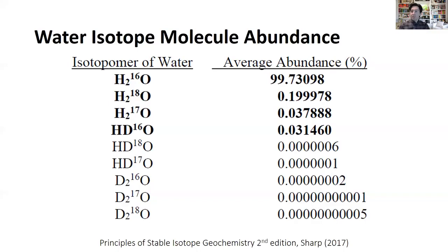The second most abundant is H₂¹⁸O — two units of protium and oxygen-18 — at about 0.2%. Then we have H₂¹⁷O at less than 0.037%, and then one protium, one deuterium, and oxygen-16 at about 0.03%. All other water isotopologs are much less abundant in the earth's system, so we're going to focus just on the two most abundant molecules: H₂¹⁶O and H₂¹⁸O.